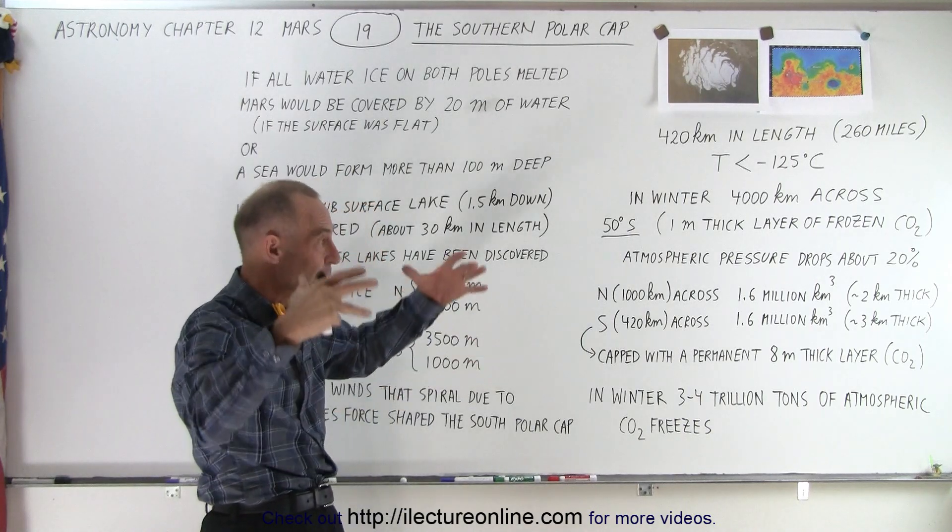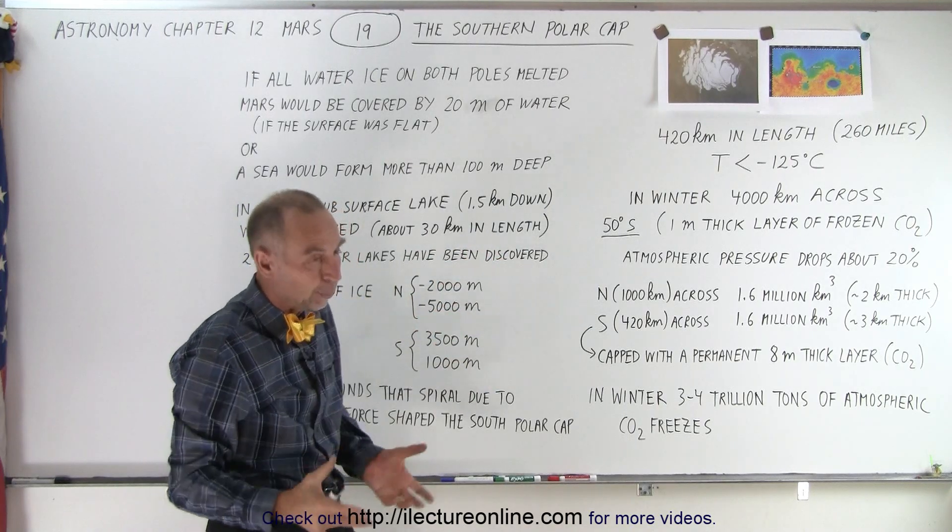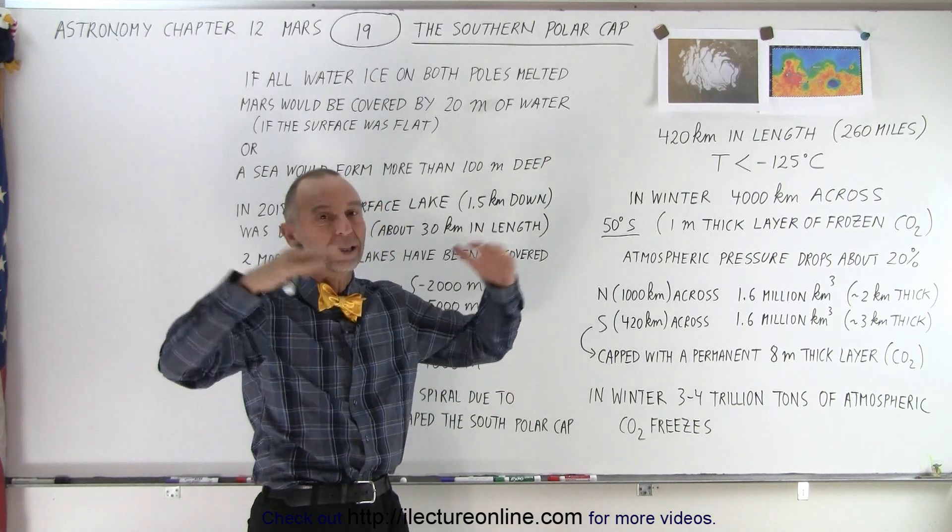So it's a huge region on Mars that gets frozen over where the atmosphere simply freezes and makes a thick layer of carbon dioxide. When it gets warmer, when spring comes and summer comes, it all sublimates back into the atmosphere and the atmosphere is restored and the ice disappears from the surface.